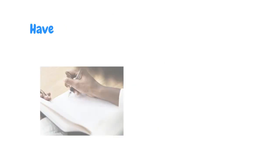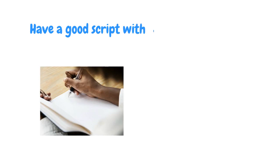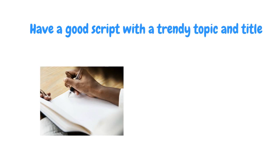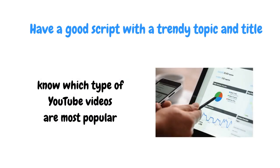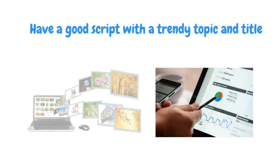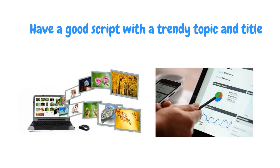Number one: have a good script with a trendy topic and title. It's good to know which type of YouTube videos are most popular with audiences and understand how to develop highly shareable, viral content around these ever-evolving trends.